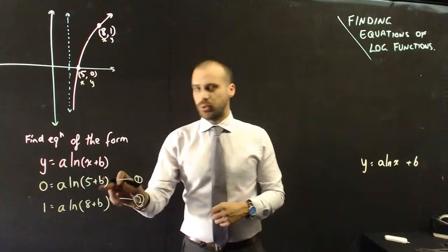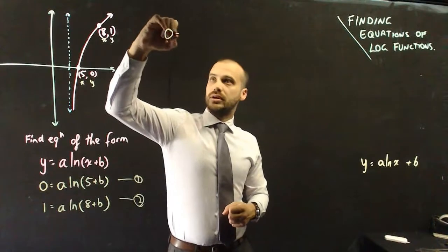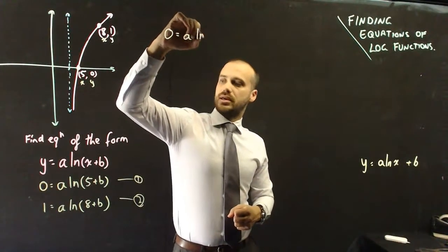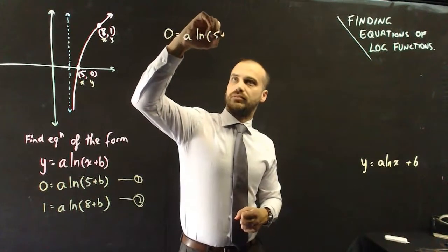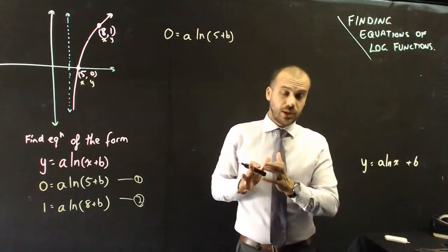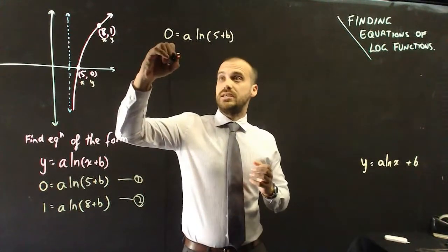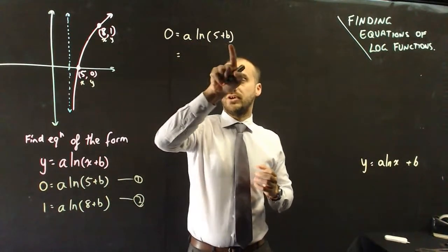I'm just going to start sort of tinkering with it. 0 equals a ln(5) plus b. Now the problem is that there's two variables. If I can get rid of one, I might have a bit of a chance here. And I'm going to do that in a sneaky way. This is a times ln(5) plus b. If I divide by a on both sides, I get 0 divided by a.